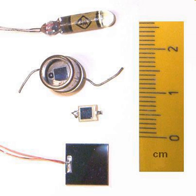Avalanche photodiodes are photodiodes with structure optimized for operating with high reverse bias, approaching the reverse breakdown voltage. This allows each photo-generated carrier to be multiplied by avalanche breakdown, resulting in internal gain within the photodiode, which increases the effective responsivity of the device.